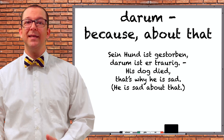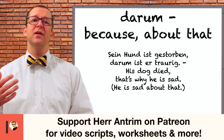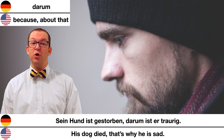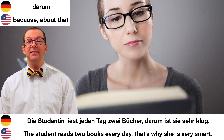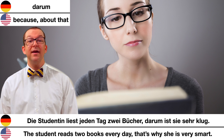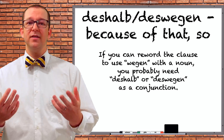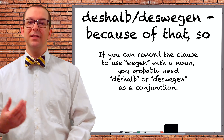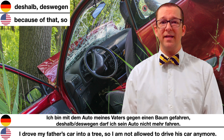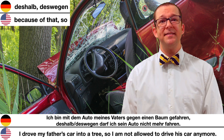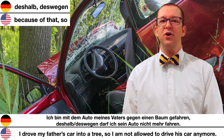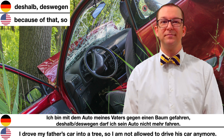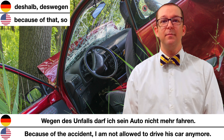Darum is similar to daher in that it could be translated as because, but darum carries the connotation of around that or about that. Sein Hund ist gestorben. Darum ist er traurig — His dog died; that's why he's sad. Die Studentin liest jeden Tag zwei Bücher. Darum ist sie sehr klug — The student reads two books every day; that's why she is very smart.